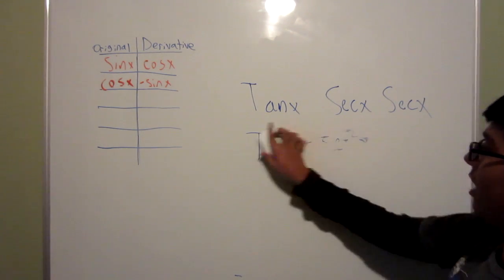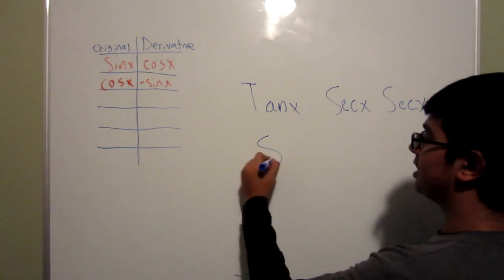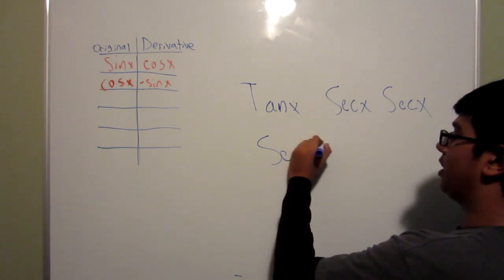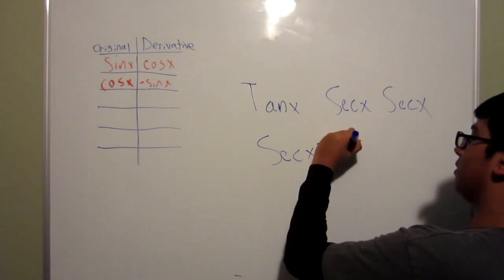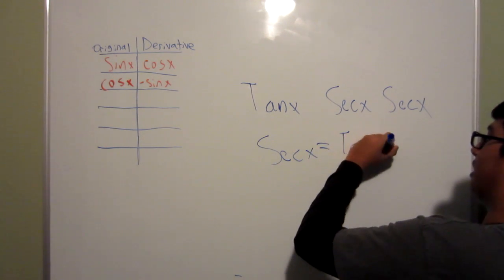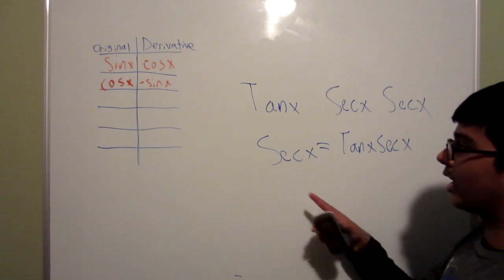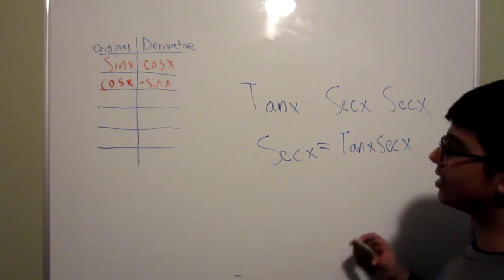And now if you also have the same works with secant, or if you have one secant, you just multiply the two that are missing, and you get tangent x secant x. That's the easy way of remembering the derivatives for tangent and secant.